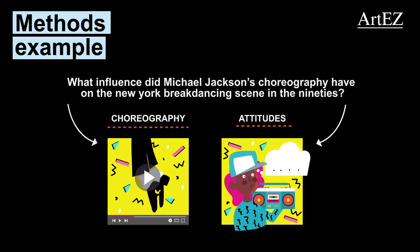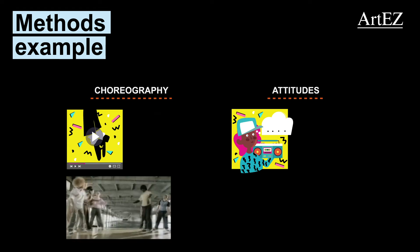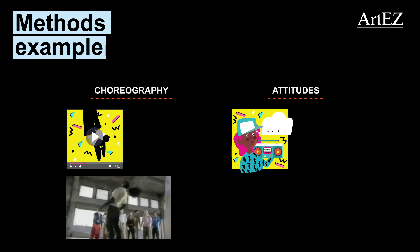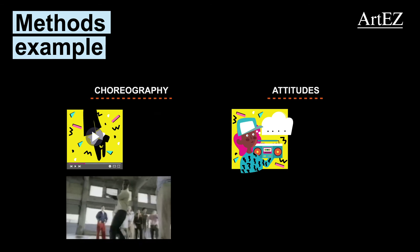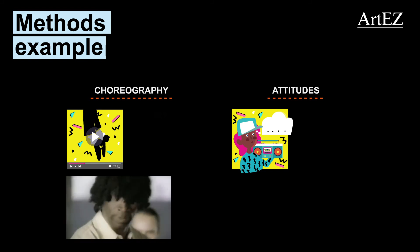We need to operationalize those variables. Gathering data on the actual choreography can be done in several ways. For instance, you could look at a sample of video materials involving breakdancing and study the choreography for similarities to Michael Jackson's choreography.